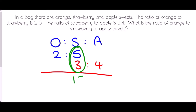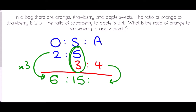5 times 3 is 15. What did I do to the first ratio to turn it into a value of 15 for strawberry? That was multiplied by 3, and so I need to do the same with the 2: 2 times 3 is 6. On the second ratio, what did I do to turn the 3 of strawberry into 15? I multiplied by 5, and so I have to do that with apple as well — it's going to be 20. The ratio of orange to strawberry to apple is 6 to 15 to 20.